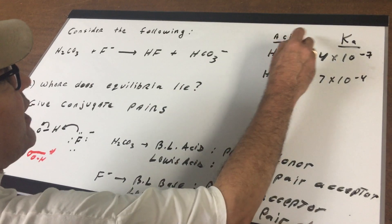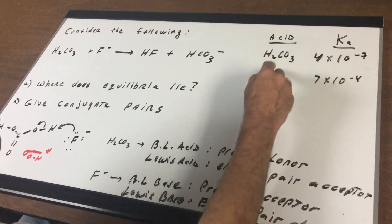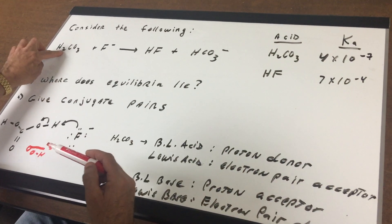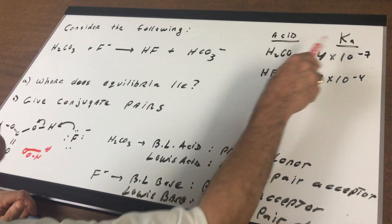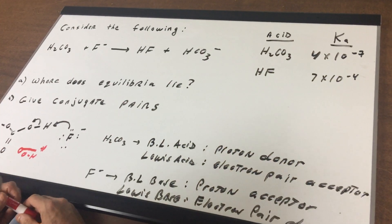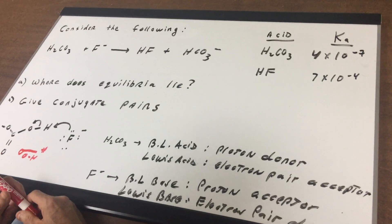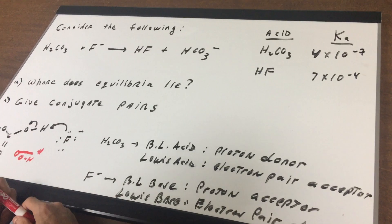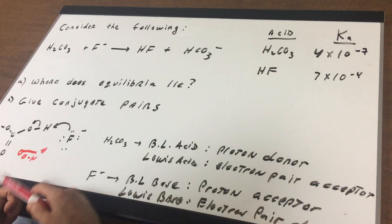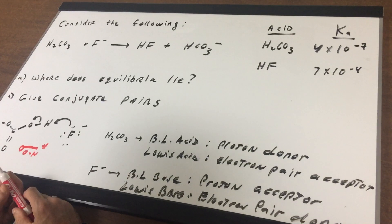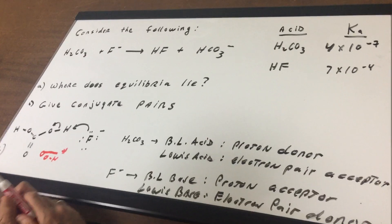And I give you the Ka of each of the acids. Since only one H came off a carbonic acid, I only gave you the Ka1. So we're going to get 4×10⁻⁷ for the first Ka1 for the carbonic acid and 7×10⁻⁴ for HF.